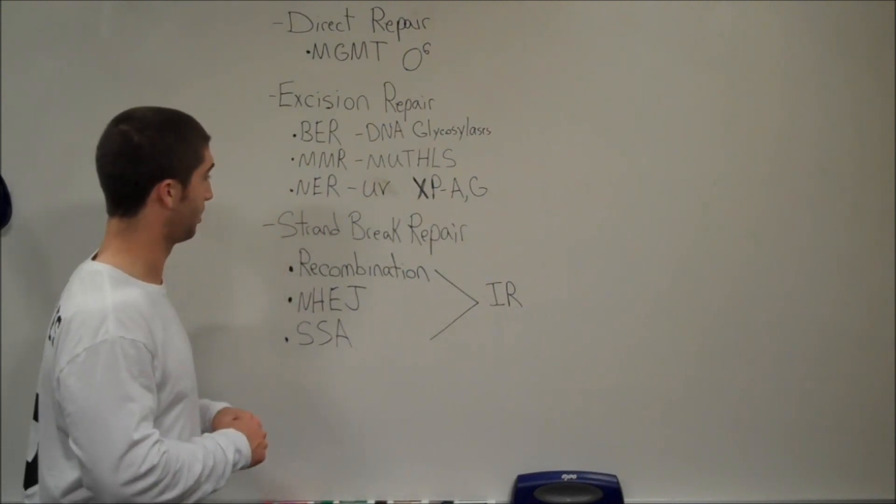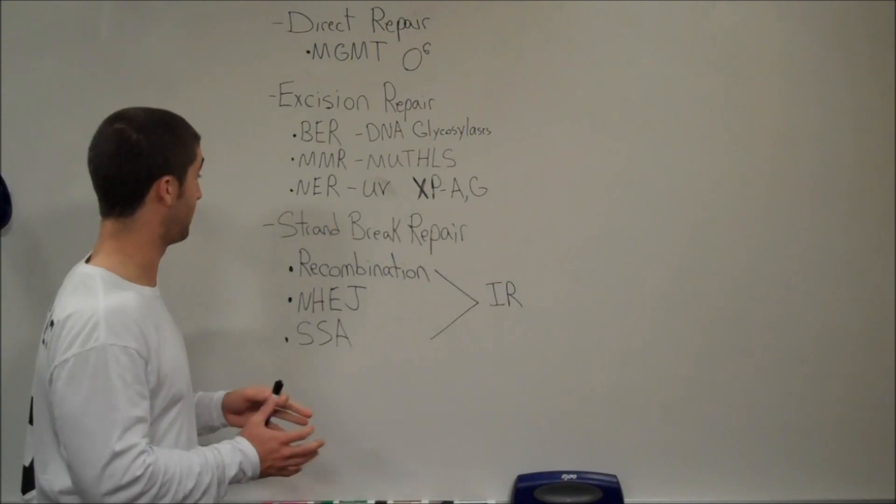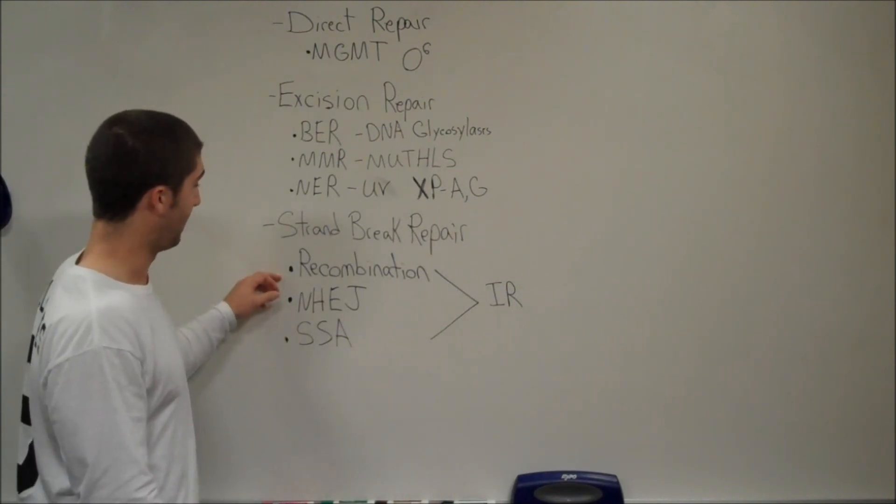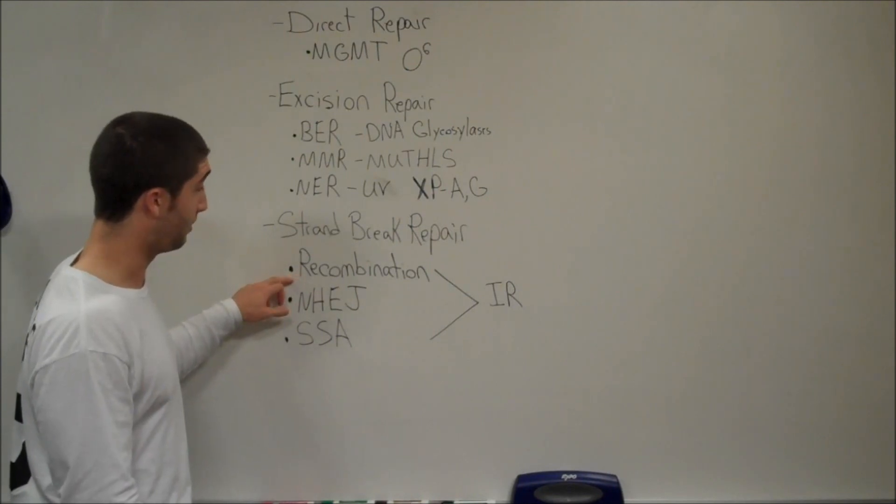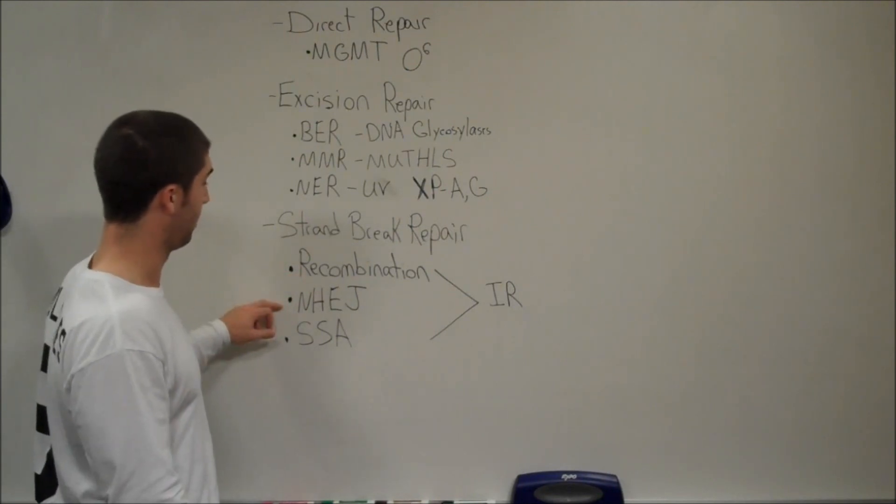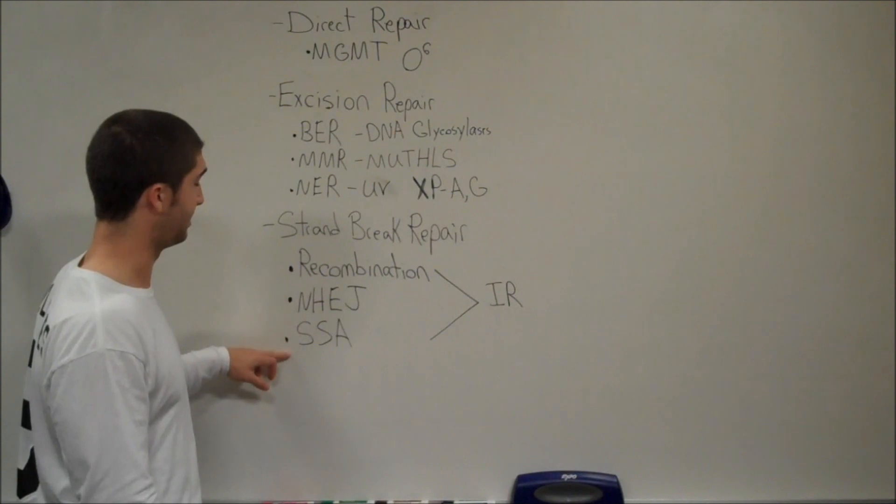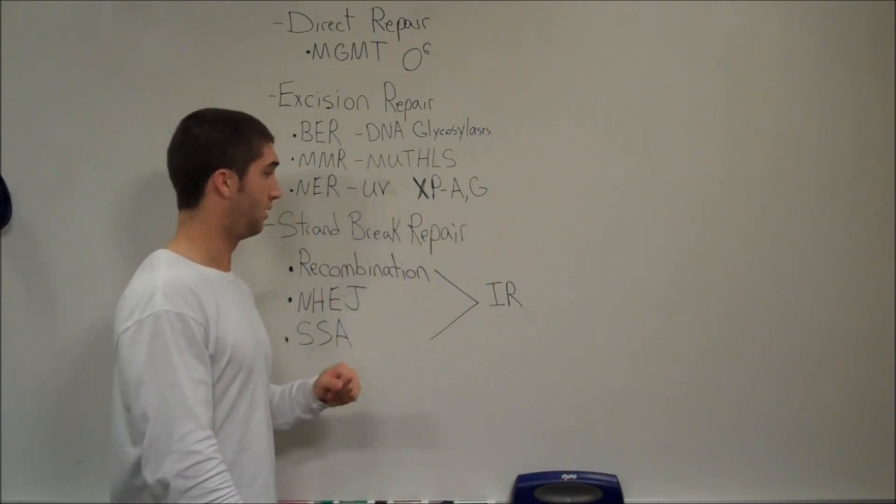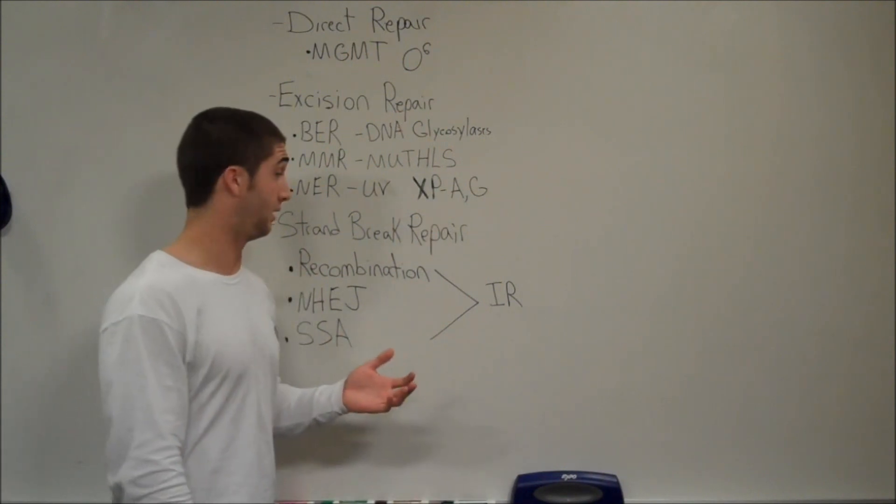Last one is strand break repair. I'm not going to go over a lot about this. There's only two slides in your notes about it. You can have recombination repair, non-homologous end joining, and single-strand annealing. And what they all do is they're going to fix double-stranded and single-stranded breaks in damaged DNA due to ionizing radiation.